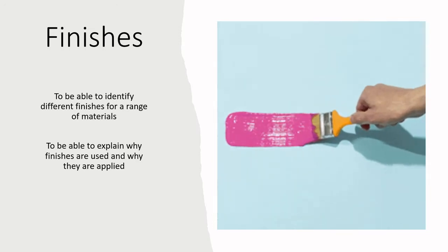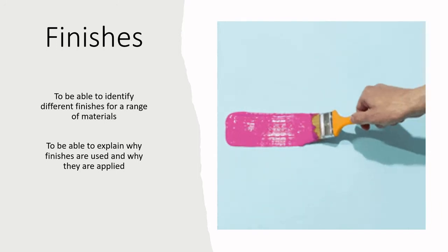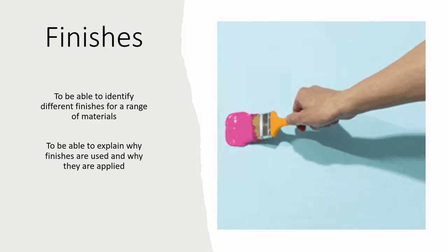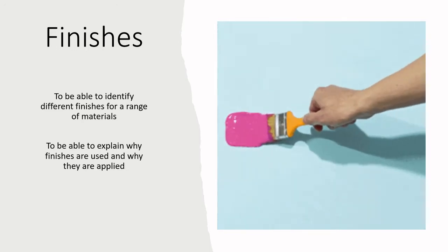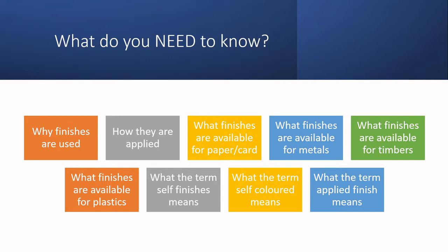In today's video we're going to look at finishes. You need to know about different materials we've already covered — metals, polymers, timbers — how you might finish them, why you might finish them, and the fact that there are multiple different finishes. Key terms to know include why finishes are used, how they're applied, self-finishing, self-coloring, and applied finish.